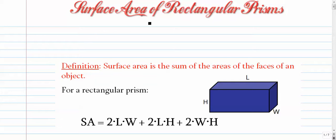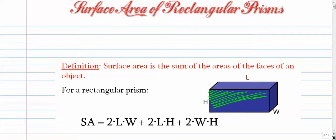We're going to start our measurement unit off with a video on Surface Area of Rectangular Prisms. First things first, we need to talk about what surface area actually means. Surface area is defined as the sum of the areas of the faces of an object. We're talking three-dimensional solids, and we're looking at finding the total area of all the faces or surfaces that are on the outside.